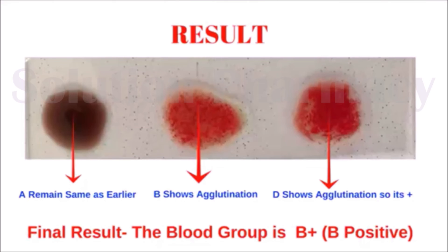Agglutination reaction occurs when the specific agglutinogen (antigen) present on the surface of the RBC reacts with the corresponding antibody present in the antisera. After the reaction between the specific agglutinogen and agglutinin, clumping followed by hemolysis (breakdown of red blood cells) occurs — this is called agglutination. When we take a blood sample for blood group determination, the antigen on the RBC surface reacts with the antibodies in the antisera solution, and the slide is observed for agglutination.